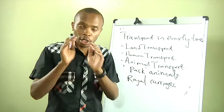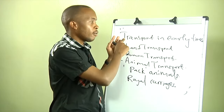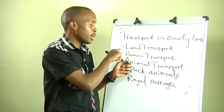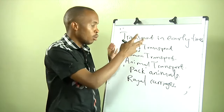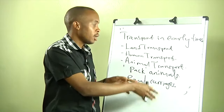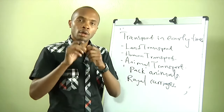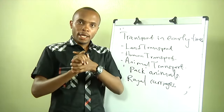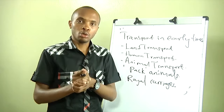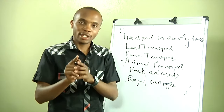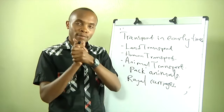That marks the end of our presentation. When we meet next, we will continue looking at some of the animals used as pack animals, and we will also be looking at the forms of transport in early times — we said land transport and water transport, so the next one will be water transport. To receive fingertips in History Form 2, send the word HIST2 to the number 21126. Thank you very much. See you next time, same time, same place.